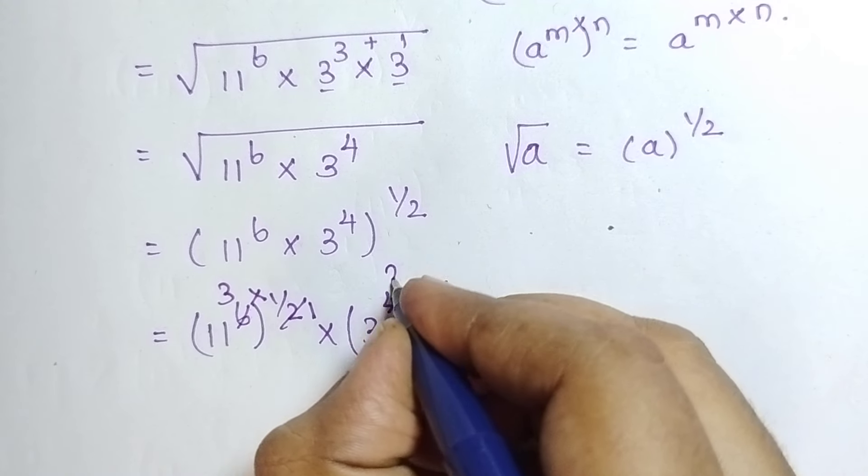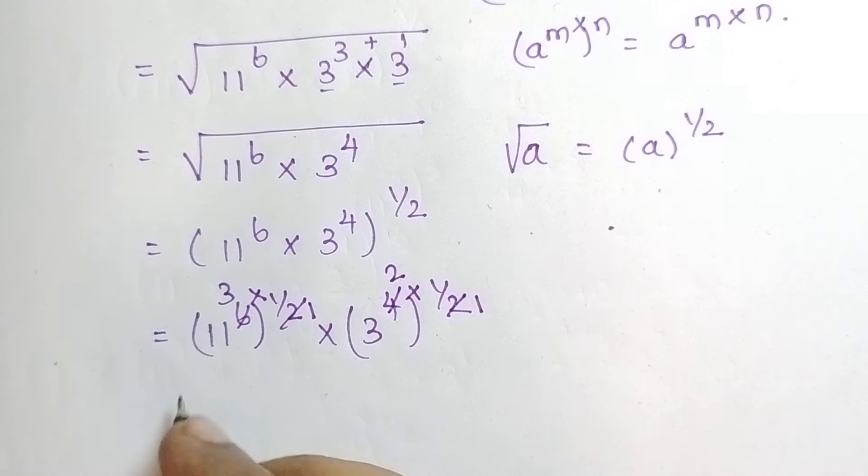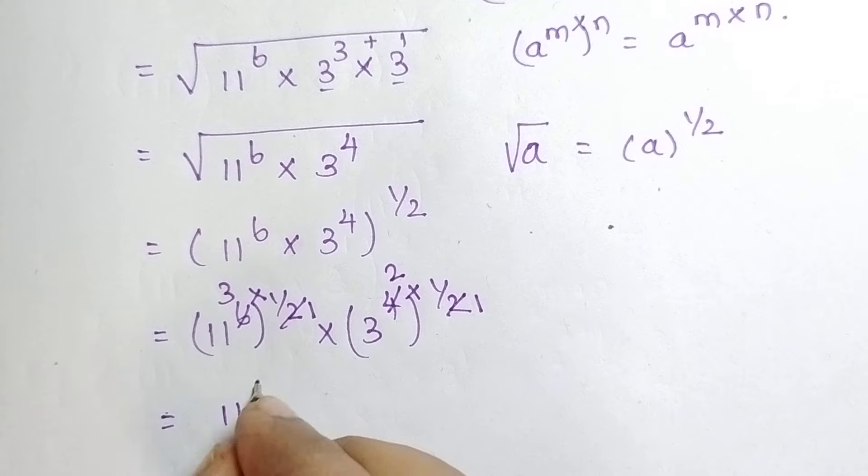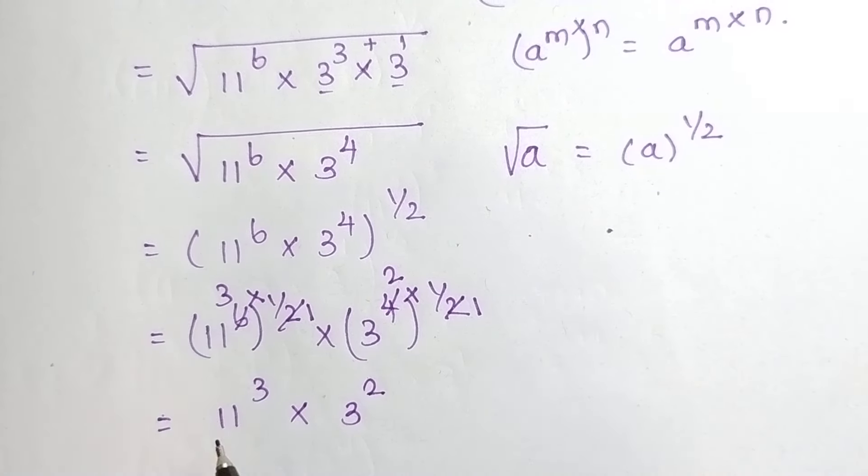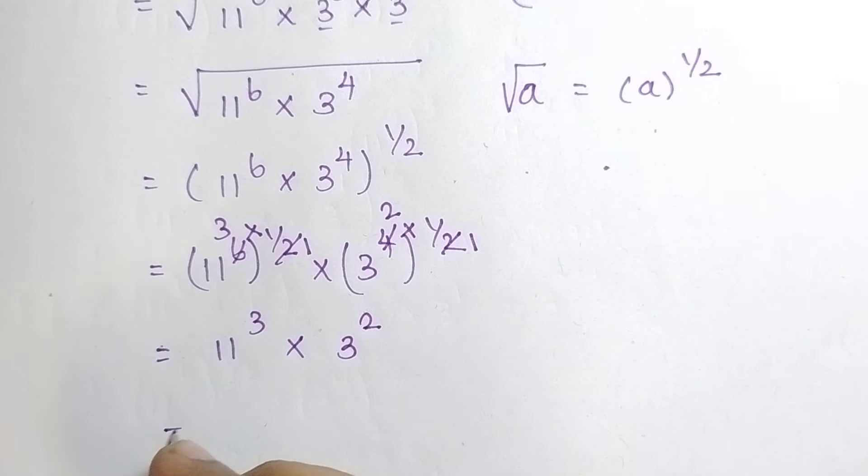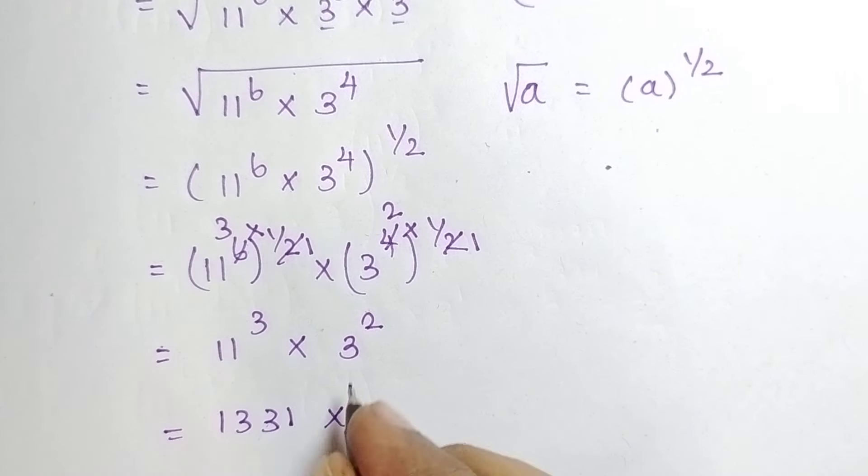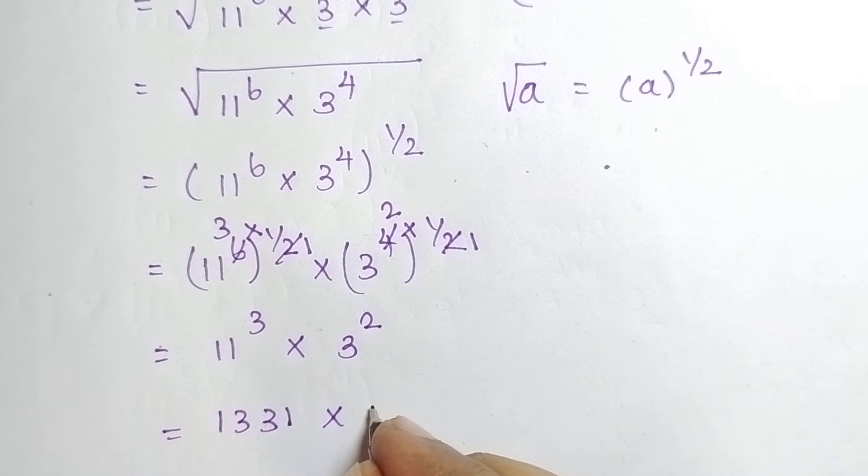1, 2 is 2, 2 2s are 4. The powers get cancelled. Then, I get 11 cube into 3 square. We know that, 11 cube is equal to 1331 into 3 square is equal to 9.